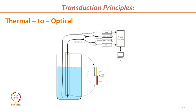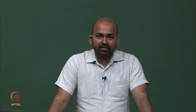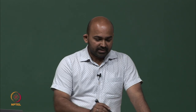Another transduction principle is thermal-to-optical, converting thermal energy into a corresponding optical signal. An optical fiber passes through a liquid at different temperatures. When light passes through the fiber and temperature changes, multiple properties of the optical waves change. These changes in optical properties can be detected using an analog interferometer or other instruments. This is a thermal-to-optical converter — one form of transduction.